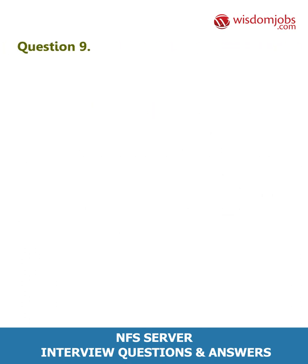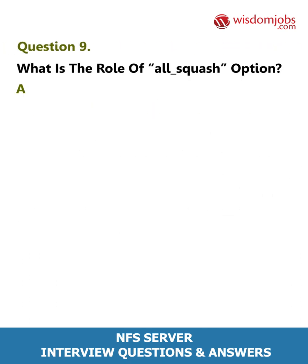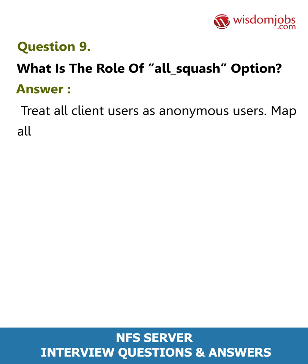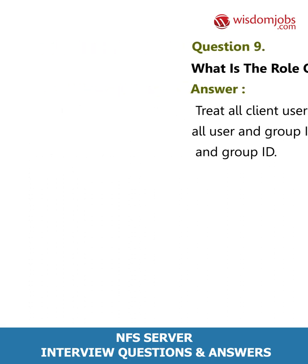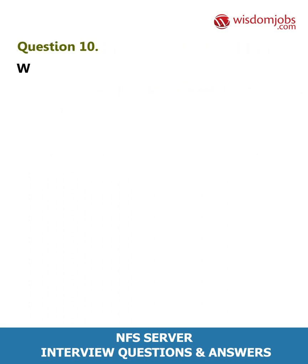Question 9: What is the role of the all_squash option? Answer: Treat all client users as anonymous users — map all user and group IDs to the anonymous user and group ID.